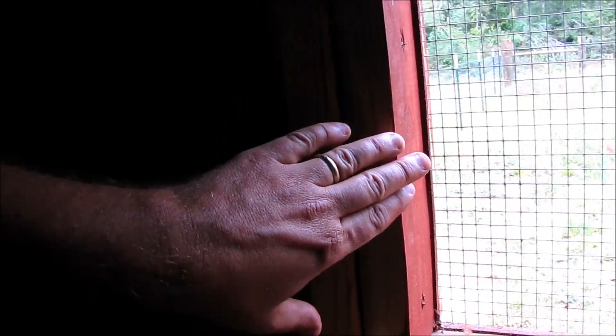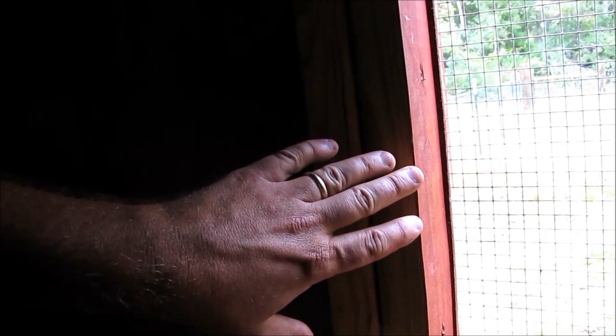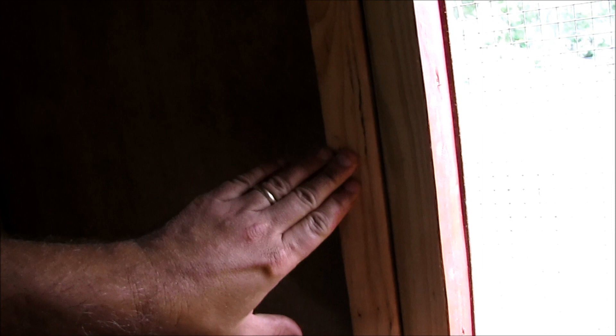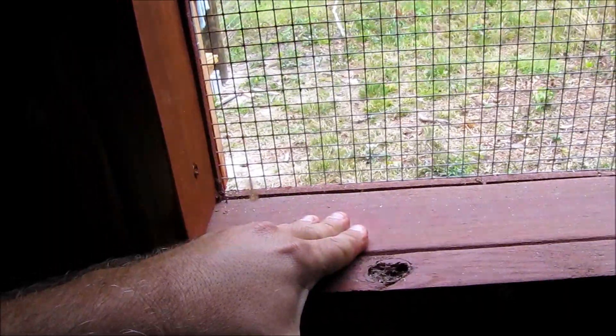What I did is I came in here and screwed in some pressure treated two by fours to act as a moisture barrier between any wind that may blow in here and the regular yellow pine. So rain moisture blows in here, it'll go to pressure treated instead of the wall studs.